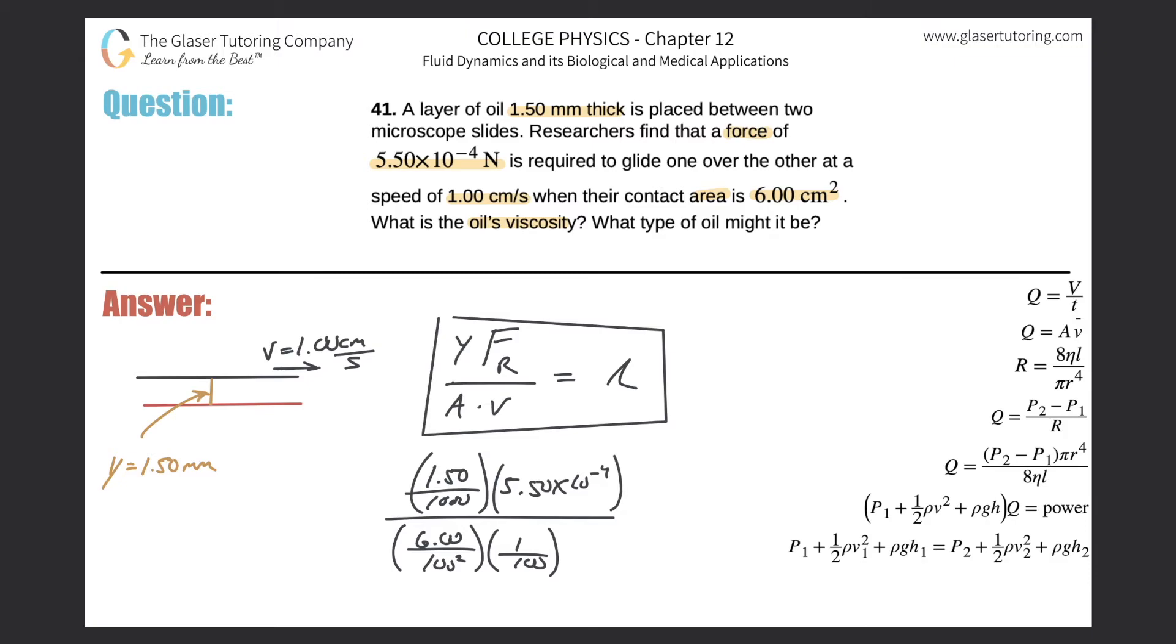Now we can do this calculation out. This is then equal to the viscosity. So, ready? We've got 1.5 divided by 1000, times 5.5 times 10 to the minus fourth.